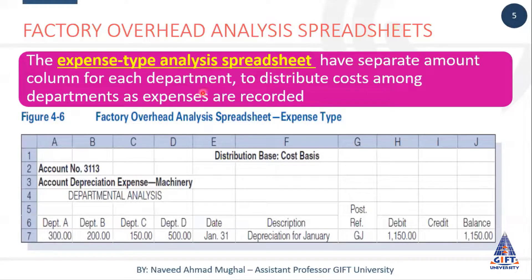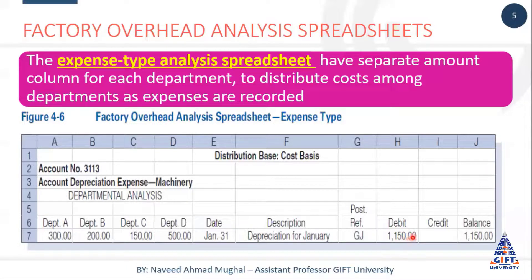Expense type analysis spreadsheet ka matlab hai ke hum Excel mein ek sheet banate hain, jis ko use karke hum log expense wise us ko banate hain. Jaise hum log har ek expense ke liye ek sheet banate hain - jaise yahan pe depreciation expense machinery ki ek sheet bani hoi hai. Aur us mein hum log dekhte hain ke iska jo bhi depreciation expense aya hai mahinne ka - that is one thousand one hundred and fifty - and we will distribute that expense among the departments because we have multiple departments.